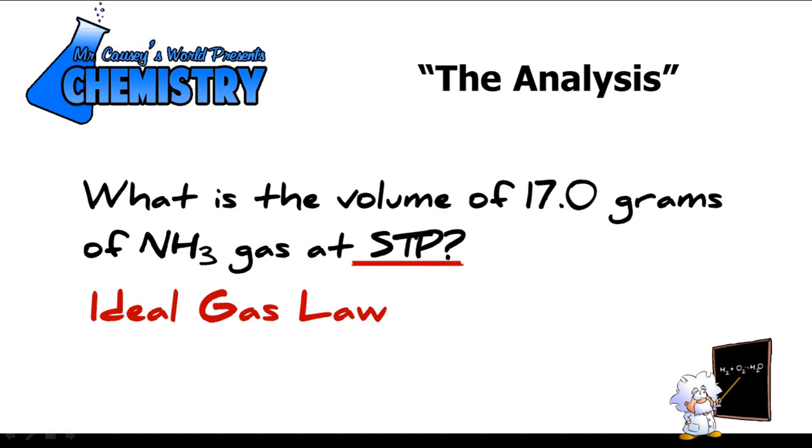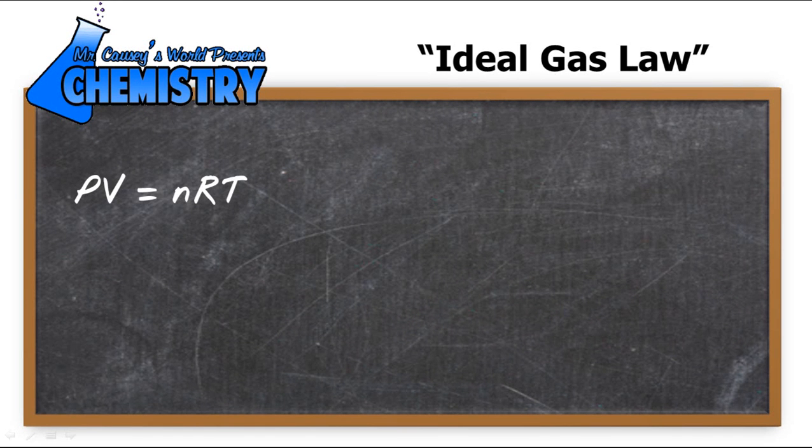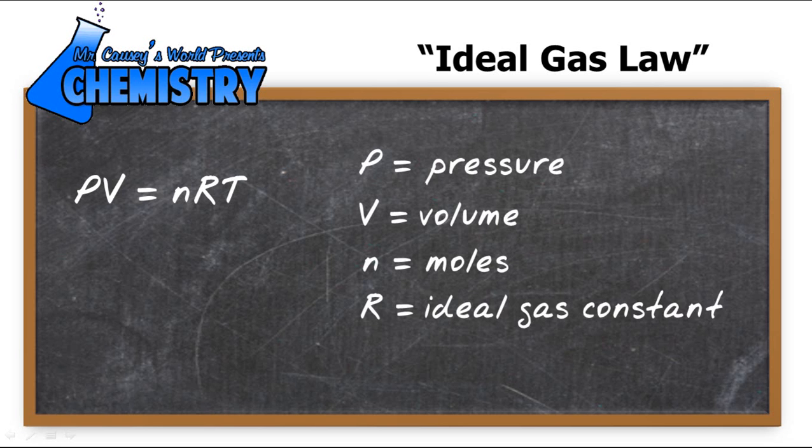So off to the magic blackboard. The ideal gas law is pressure times volume equals moles times R and temperature. And R is just the ideal gas constant. So P is pressure, V is volume, N is moles, R is the ideal gas constant, and T is temperature.